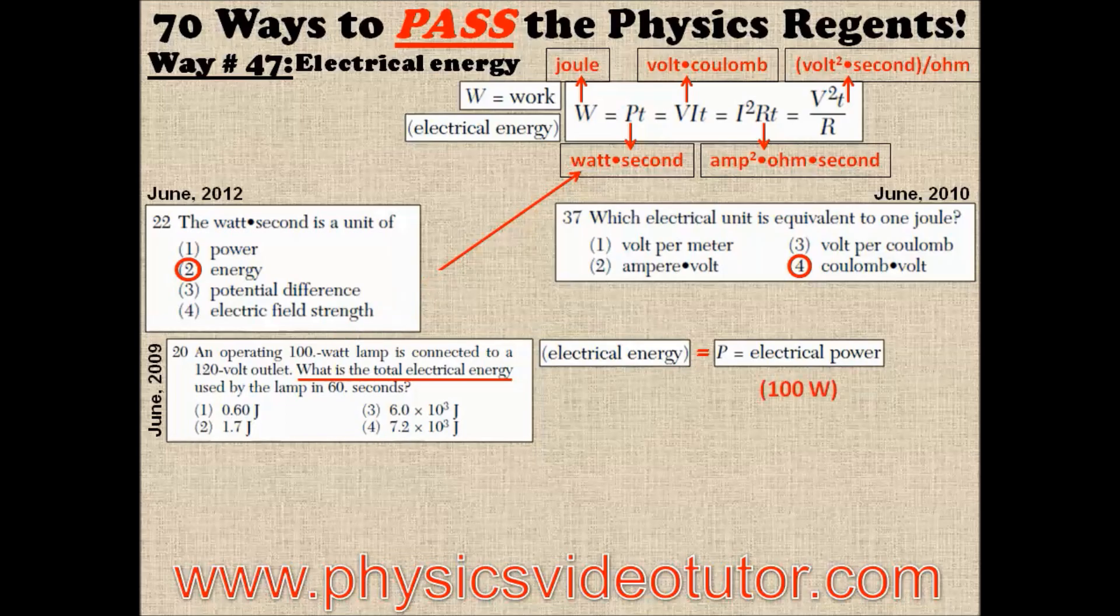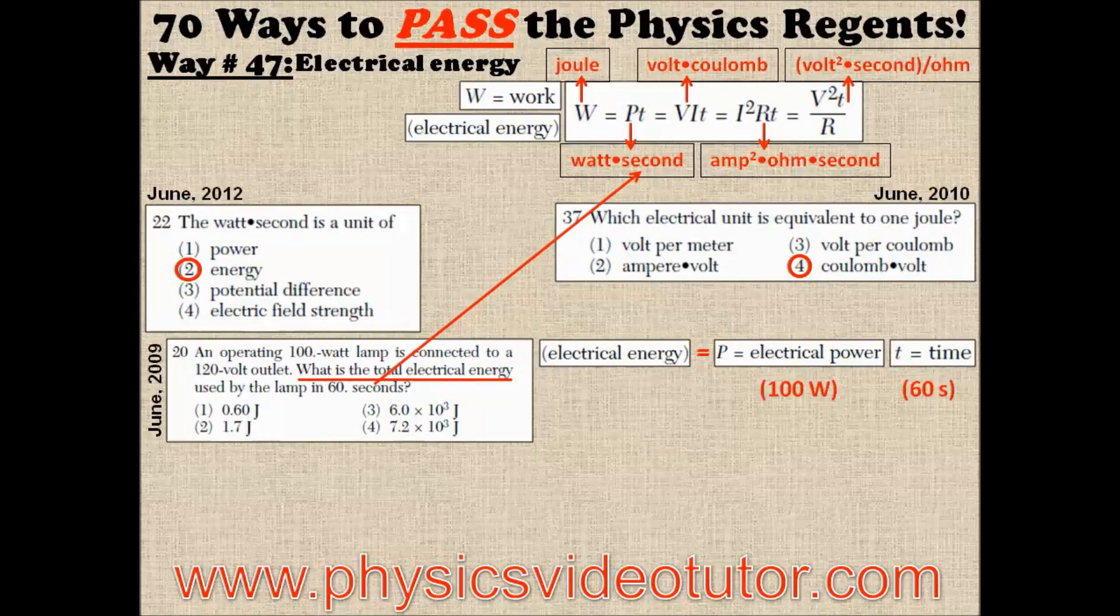And since that is the only formula containing power, we'll need time in seconds as well, which in this case is 60 seconds. Without needing to use the 120 volts in this equation, multiplying the watts by the seconds will get you 6000 joules, which is 6 times 10 to the 3rd joules in scientific notation.